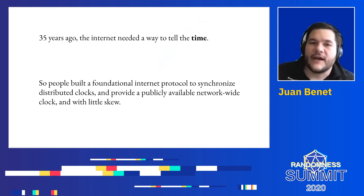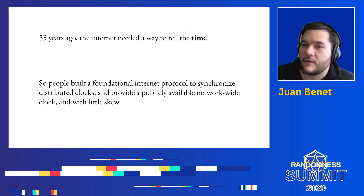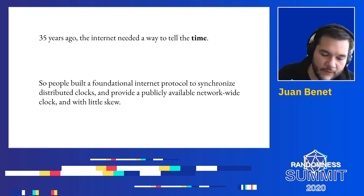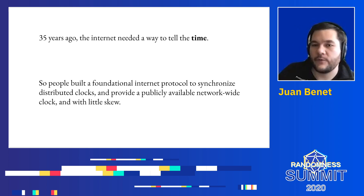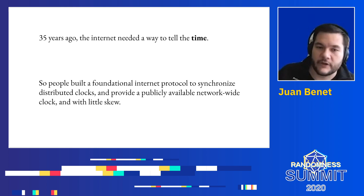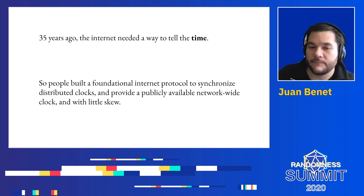The story of time is interesting. Around 35 years ago, the Internet needed a way to tell time. There were a lot of different computers around the network that had a very large clock skew, and so people needed the ability to synchronize the clocks of all of these computers. They decided to build an Internet protocol to do this — a distributed system to synchronize distributed clocks and provide a publicly available network-wide clock, trying to reduce the skew and provide access to much better clocks. NTP,